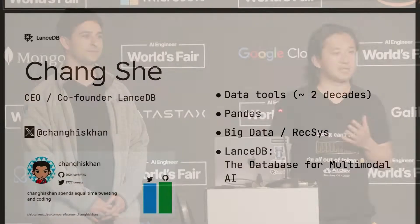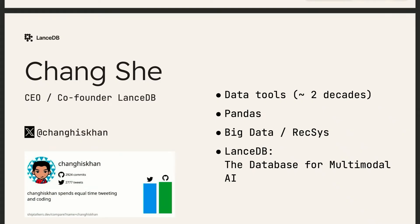We're excited to be here and talking to you about training dataset development for LLMs. My name is Chong She. I'm the CEO and co-founder of LanceDB. I've been creating data tools for data science and machine learning for almost two decades, starting with being one of the co-authors of the Pandas Library. I spent a bunch of years in big data systems and recommender systems, and most recently started LanceDB, which is the database for multimodal AI. These days, I spend roughly equal time tweeting and on GitHub.